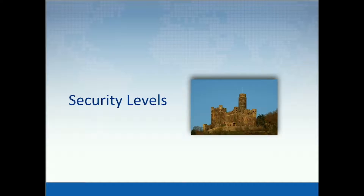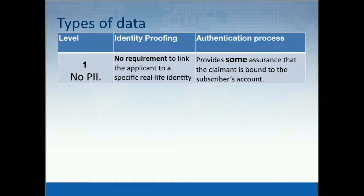When it comes to personally identifiable information, there are three security levels. Security level one is for applications that contain no personally identifiable information or any other type of information that can trace back to a real-life person — there is no link to connect to a real specific person. It can be anything from Donald Duck to Donald Trump. The authentication in this case requires just some confidence that the claimant is bound to the subscriber account.